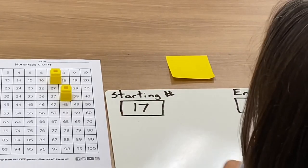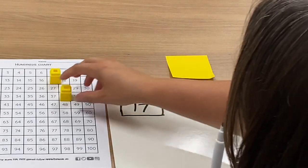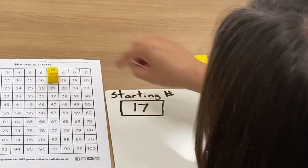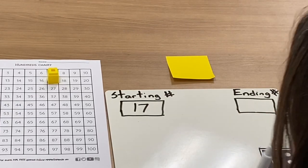You're gonna need a whiteboard, a hundreds chart, and a couple of bingo chips or little Unifix cubes. The first thing you're gonna want to do is choose your starting number and write it down. An important note, just have your students do this away from the partner they'll be playing with.